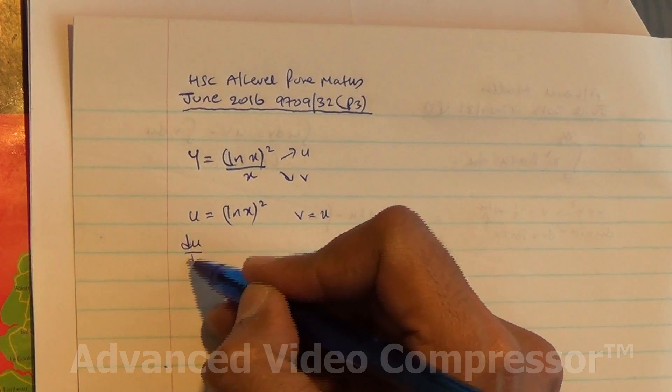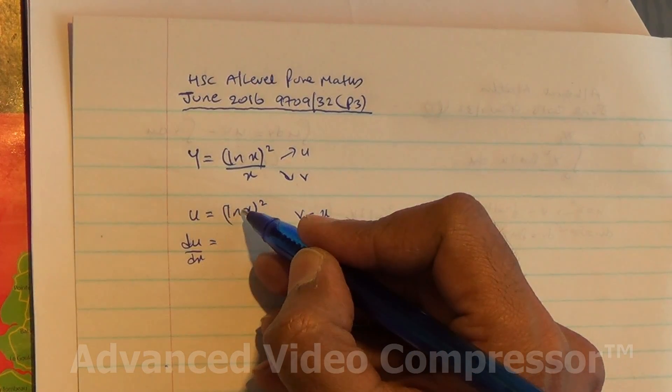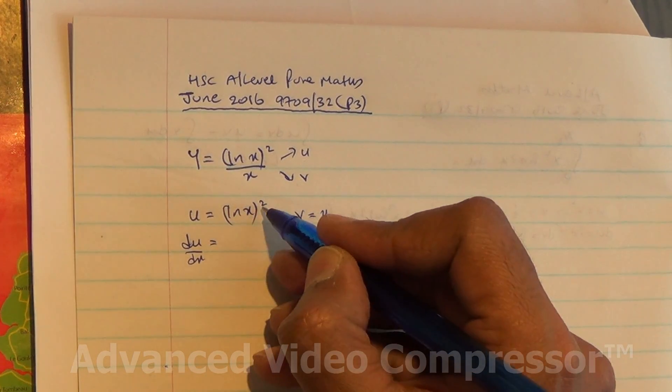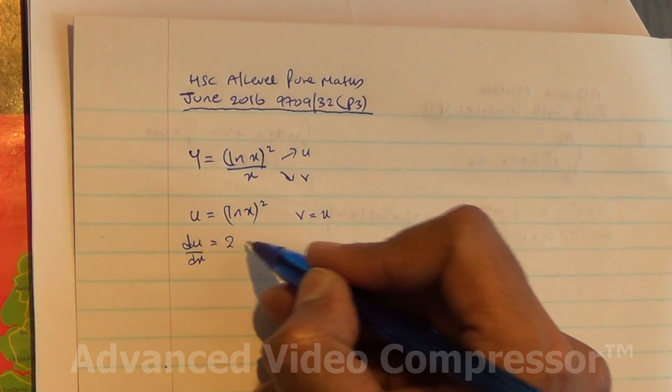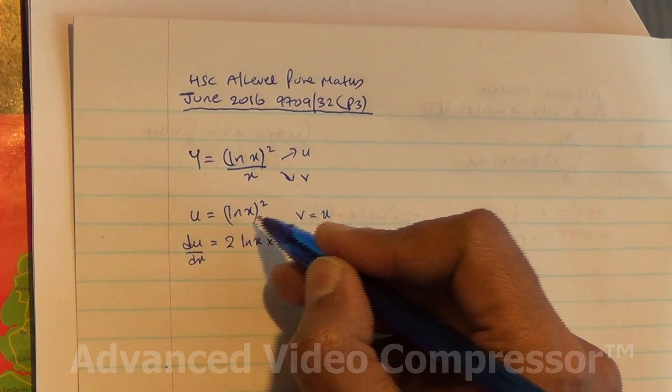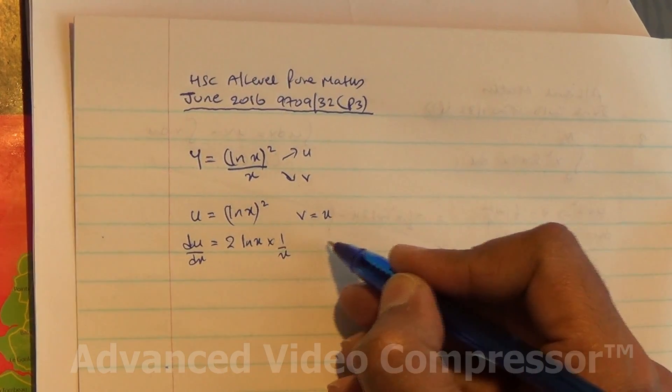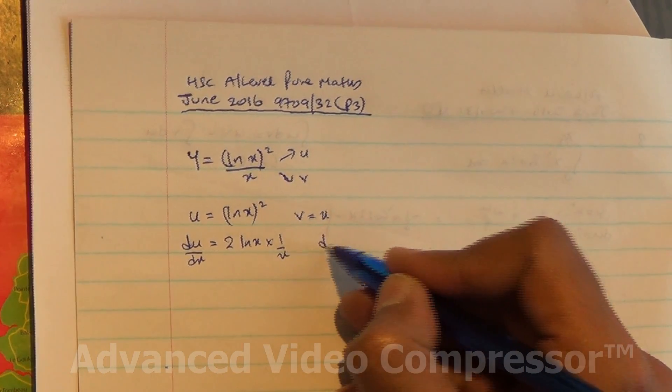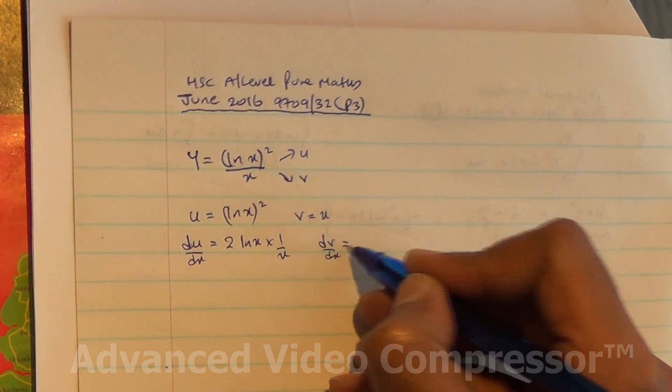So du/dx: if you differentiate this, you get 2 ln x times 1 over x. That's 2 ln x over x. Differentiate v, you get dv/dx equals 1.